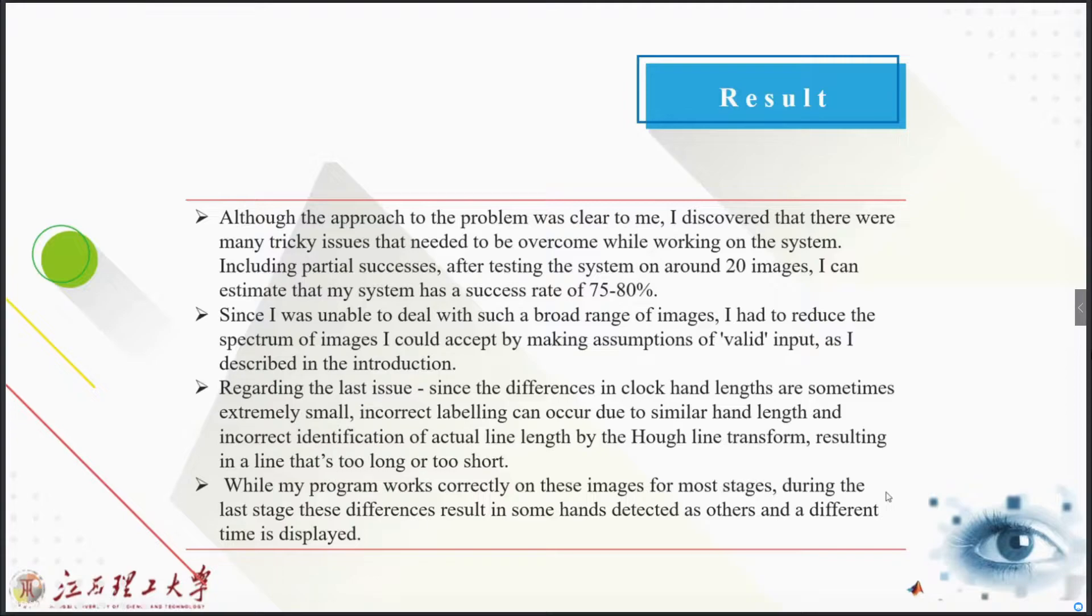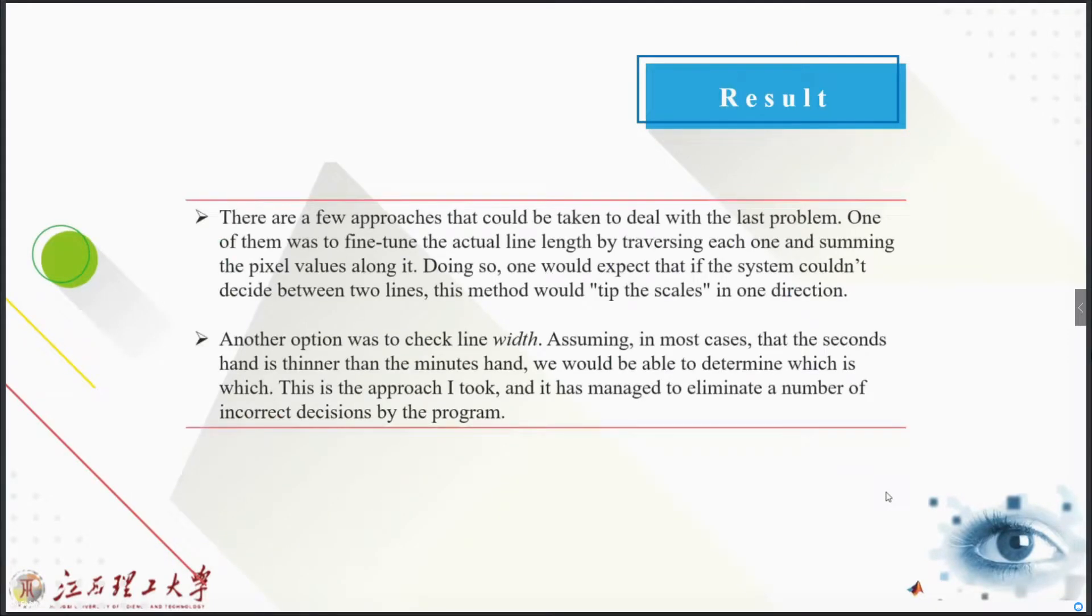Regarding the last issues, the difference in clock hand lengths—sometimes extremely small—incorrect labeling can occur due to similar hand lengths and incorrect identification of actual line length by the Hough line transformation, resulting in a line that's too long or too short. While my program works correctly on this image for most stages, during the last stage the differences result in some hands detected as other hands at different times displayed. There were a few approaches that could be taken to deal with the last problem: one was to fine-tune the actual line length by traversing each one and assuming the pixel values.